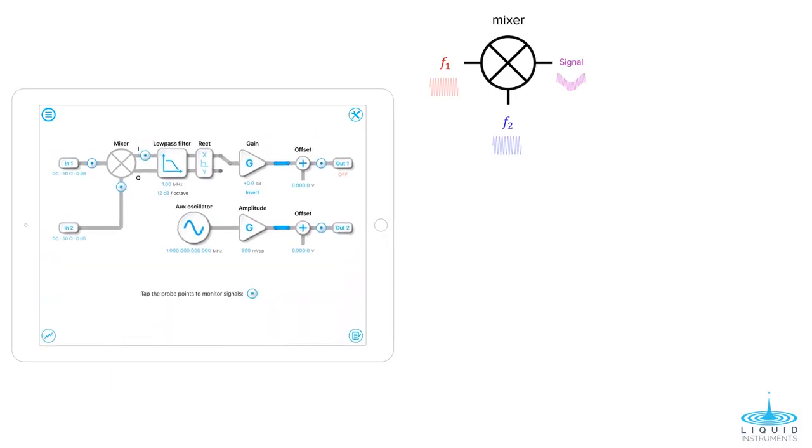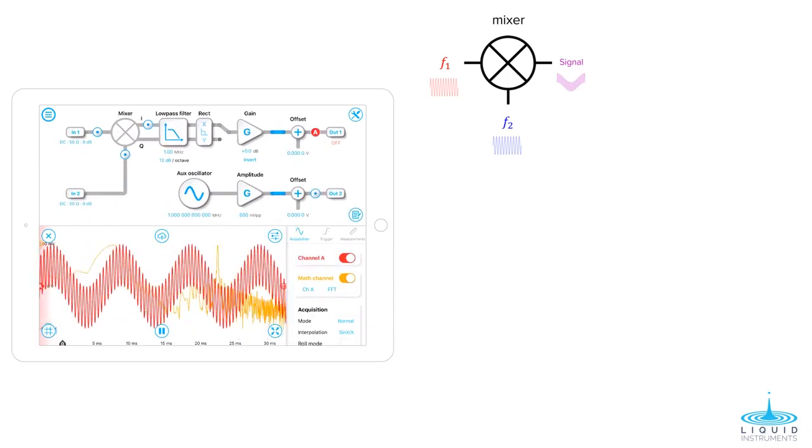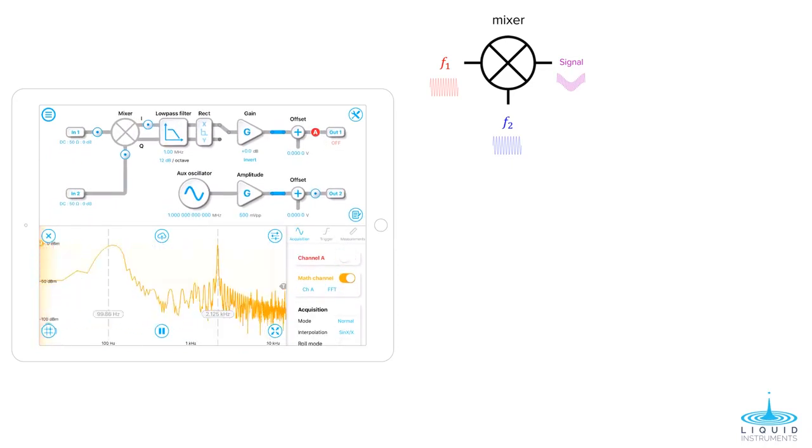Next, we probe the signal after the low-pass filter. Initially, the filter bandwidth is way above 2.1kHz, so we observe the two components have a similar amplitude. Next, we narrow down the filter bandwidth to about 100Hz. We have now successfully attenuated the high-frequency component to about minus 55 dBm.